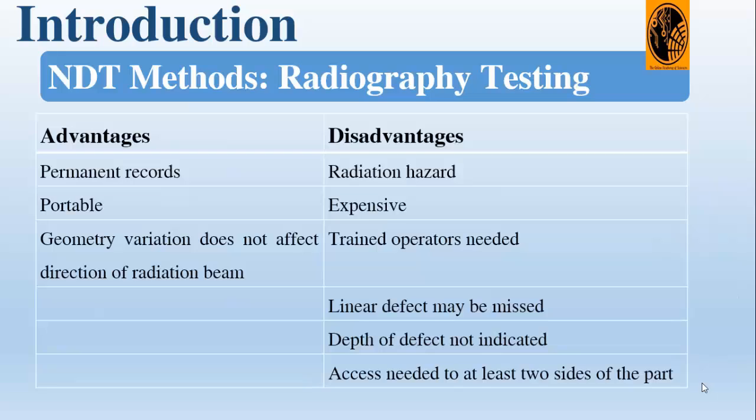This variation in radiation produces an image on the detector that often reveals internal features of the test object. The advantages of radiography are that it is portable, gives a permanent record, and geometry variation does not affect the direction of radiation. The limitations include radiation hazard, high cost, requirement for trained operators, possible missing of linear defects, no indication of defect depth, and the need for access to at least two sides of the part.